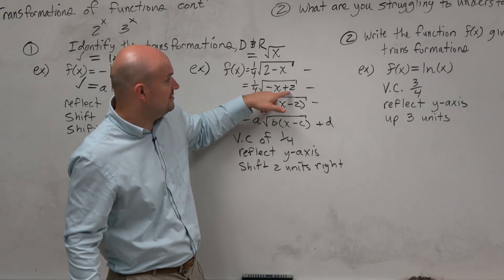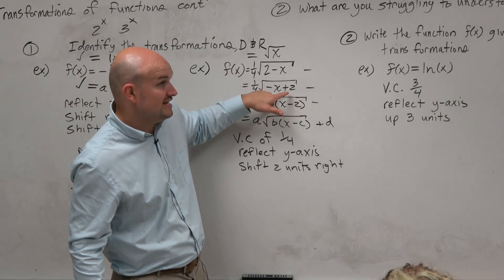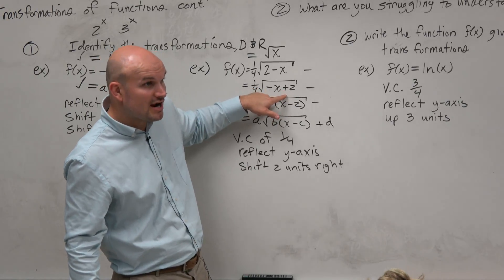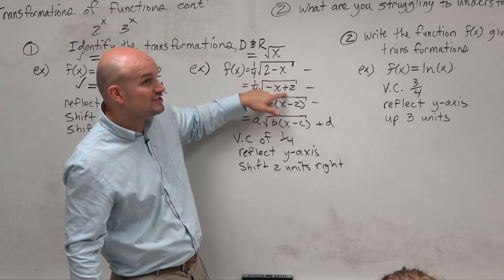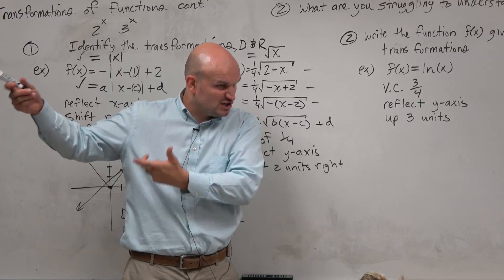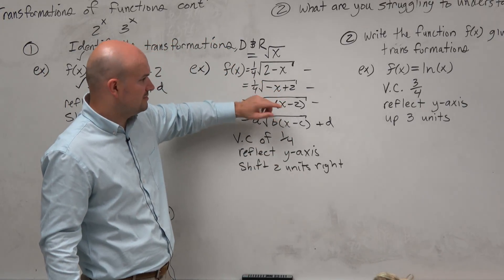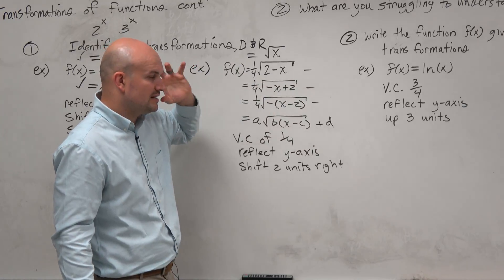If you didn't factor out that b, what would you say? You would say it shifted 2 units to the left. And if you think that's the right answer, plug that into your graphing calculator, and you'll see that the graph has not shifted 2 units to the left. It's shifted 2 units to the right. We did a problem very similar to that in the last class period. So you've just got to be careful when you have that b and the transformation.